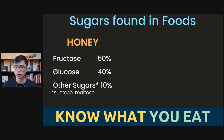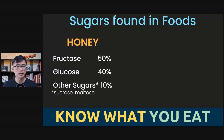All these sugars can be found together in different combinations in the foods that we eat. For example, the sugars in honey are about 50% fructose, 40% glucose, and small amounts of other sugars such as sucrose and maltose.